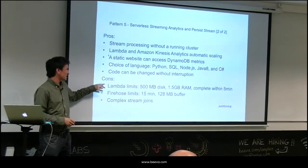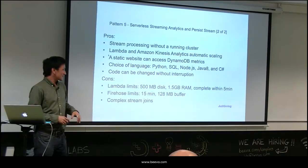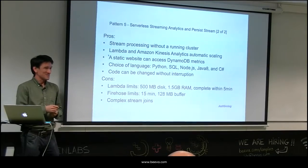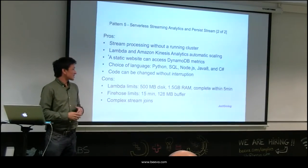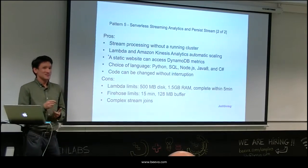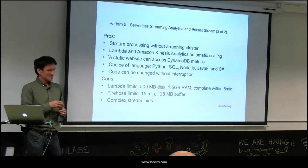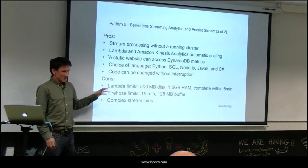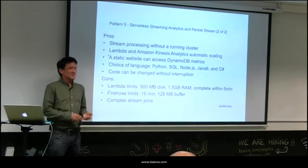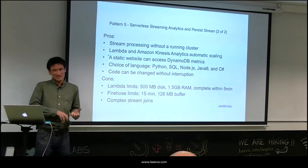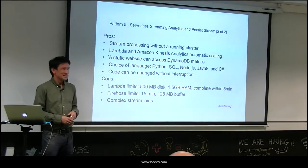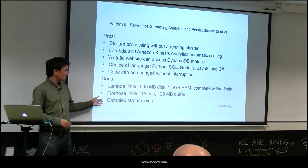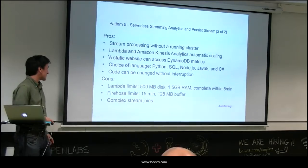There are limits to think about: if you're doing really complex long-running analysis on a Lambda function that takes longer than five minutes, it's not the right solution — look at Spark streaming instead. Also, if you're doing real-time analytics and it takes longer than five minutes, maybe it's not the right solution anyway, because five minutes is quite old for streaming analytics. Firehose also has its limits and is not suitable for complex joins — that's where I'd look at something on EMR.